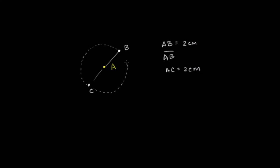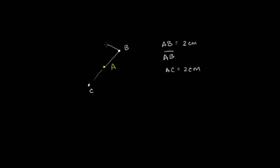If I find the set of all points that are exactly 2 centimeters away from A, I will get a very familiar-looking shape — and I'll just draw a solid line. It could look something like that. This set of all points that are exactly 2 centimeters away from A — this is a circle.